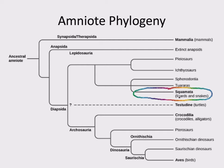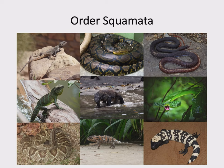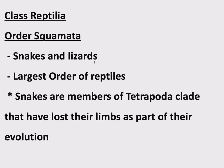If we want to talk about lizards, we go to Order Squamata — which is actually not just lizards, but snakes as well. Snakes, like caecilians, are tetrapods that have lost their limbs for the sake of a close-to-the-ground slithering lifestyle. There was selective pressure toward this, and it's always easier to lose a feature than to gain one. Order Squamata is snakes and lizards, and it is the largest order of reptiles alive today. Snakes are members of the tetrapod clade but have lost their limbs through evolution.